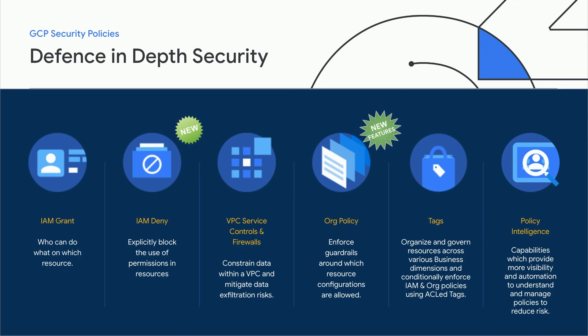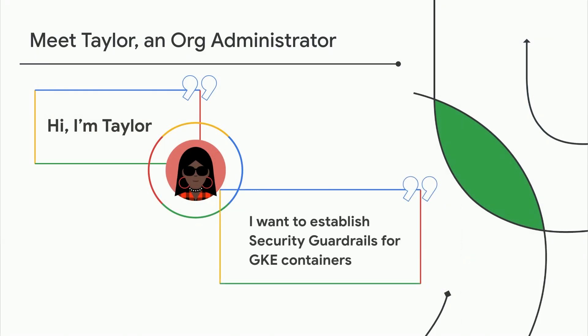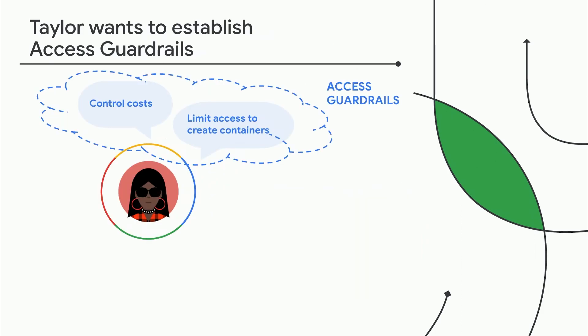To further harden security, we have been working on some exciting new features. Let's consider a use case to better illustrate these. Meet Taylor, an organization administrator who's looking to introduce preventive security guardrails in their organization. Specifically, they want to harden security for GKE containers. Due to recent increases in cost as well as unauthorized container creations, Taylor wants to introduce access guardrails to limit access to who can create containers and to control costs.